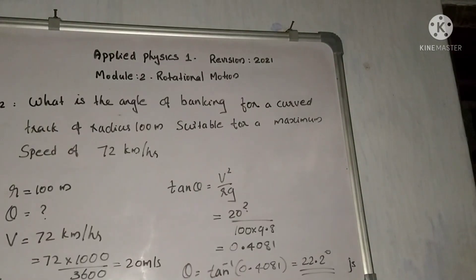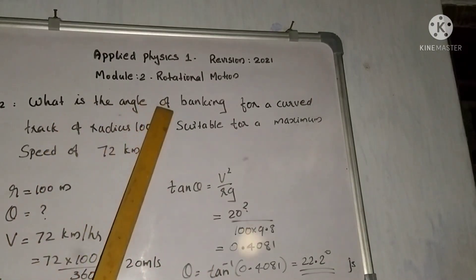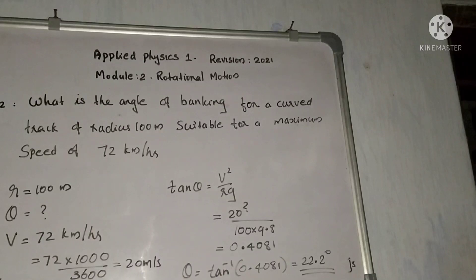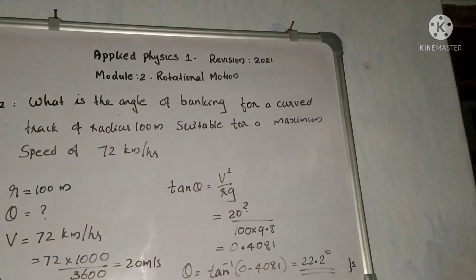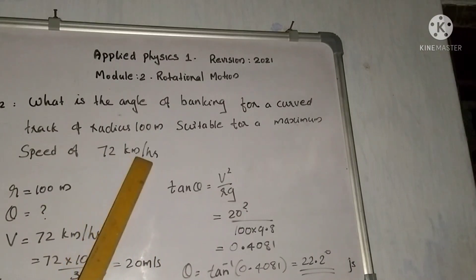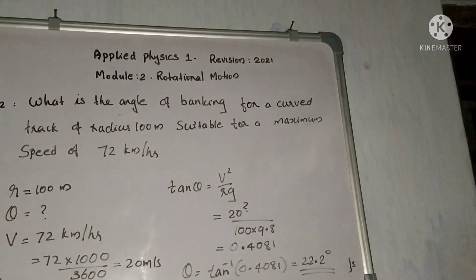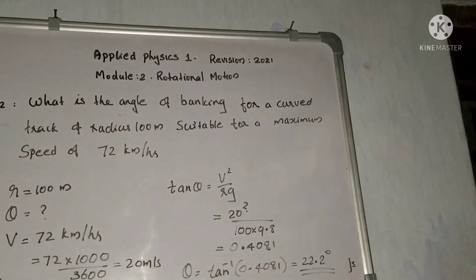Next problem: what is the angle of banking for a curved track of radius 100 m suitable for a maximum speed of 72 km per hour? Here, r is equal to 100 m.